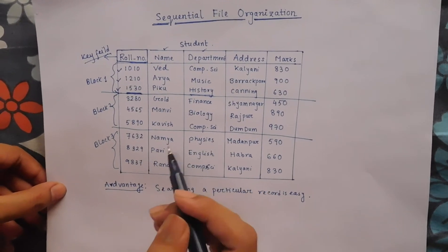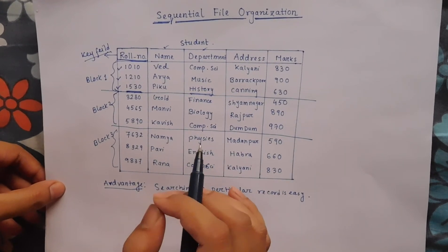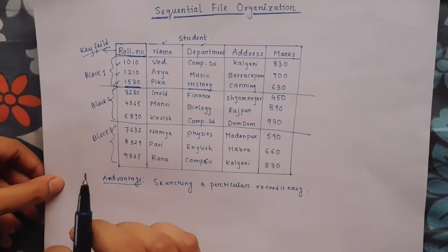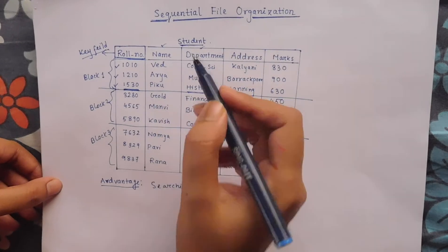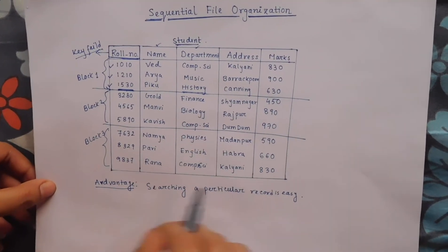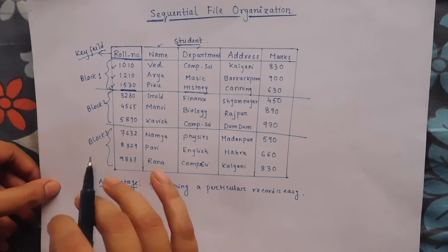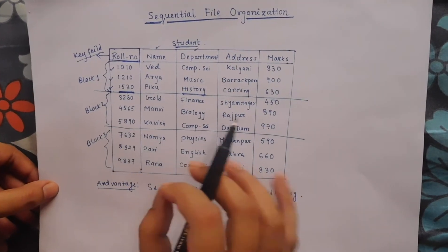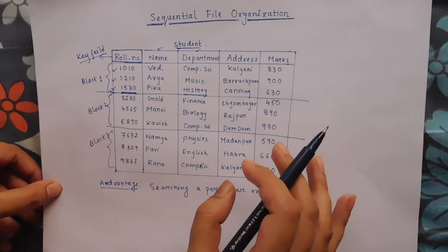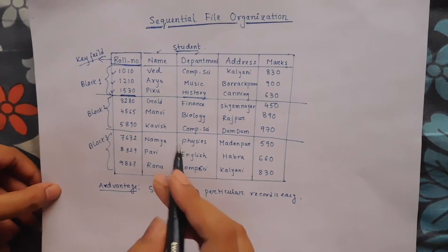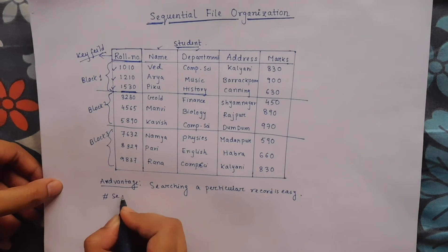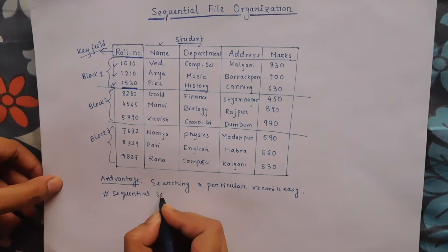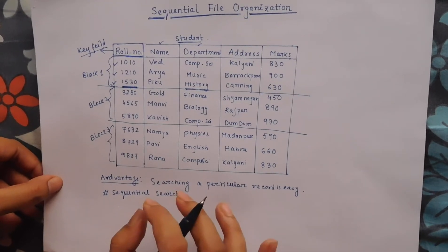However, binary search is not actually possible here because binary search is an internal search algorithm — it assumes that all the records are in main memory, which is not true. Only a block of records may be in main memory at a time. So binary search or any internal search is not possible. Only sequential search is possible.